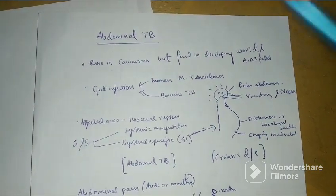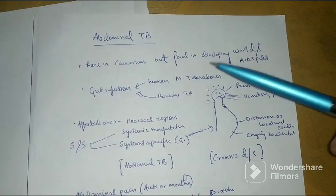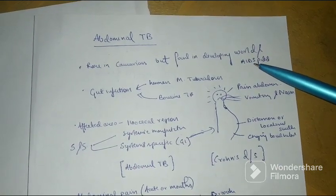Hello everyone, so this video is going to be regarding Abdominal TB, a condition which is now rare in Caucasians but is found in developing world and in AIDS patients.